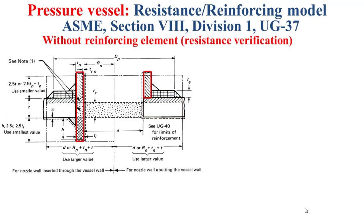This model involves also the nozzle. On the left, the nozzle is supposed inserted through the vessel wall, but on the right, the nozzle is supposed abutting the vessel wall. We have also the reinforcing element, and this element is not considered in this case — the case without reinforcing element. We have the outward and inward nozzle welds, and also the reinforcing element weld, which is not taken into consideration in this case.